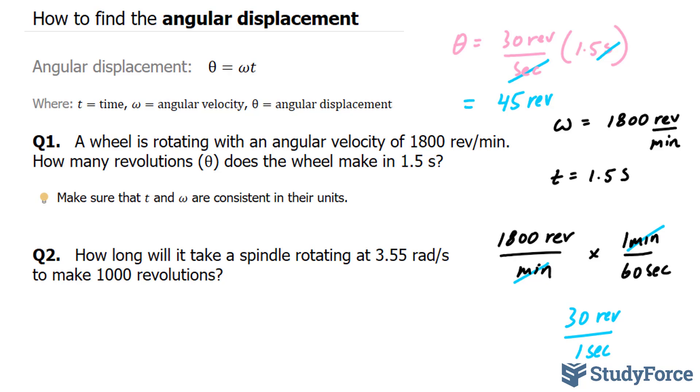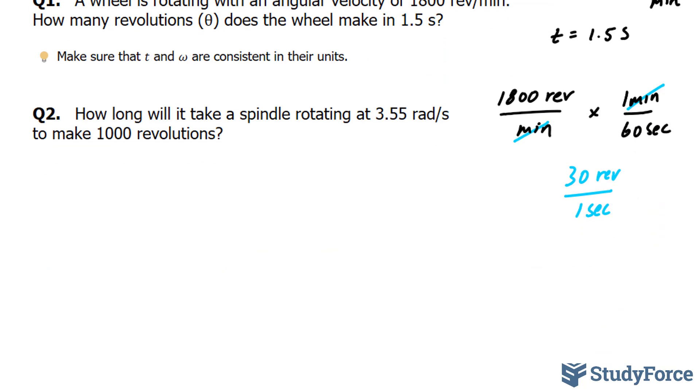Let's move on to question two. In question two they ask, how long will it take a spindle rotating at 3.55 radians per second to make 1,000 revolutions? This time they're looking for time and I can tell just from the wording how long.